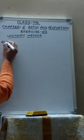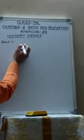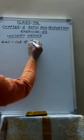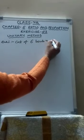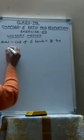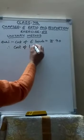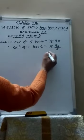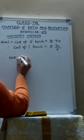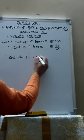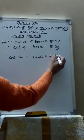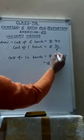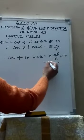Now question number 1 is that 6 bowls cost rupees 90. What would be the cost of 10 such bowls? Now cost of 6 bowls equals to rupees 90. Therefore cost of 1 bowl equals to rupees 90 divided by 6. First you will divide. Therefore cost of 10 bowls equals to rupees 90 divided by 6 into 10. So rupees 150 is the answer.